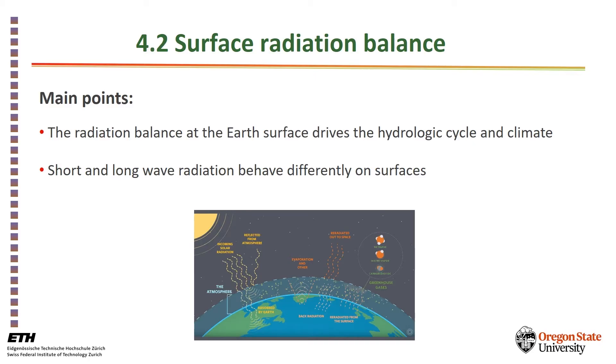I'd like to talk here about surface radiation balance. The main point is that the radiation balance at the Earth's surface — the soil surface — drives the hydrologic cycle, and it is of course a key component of the climate.